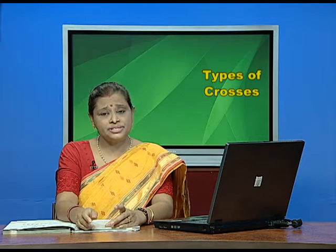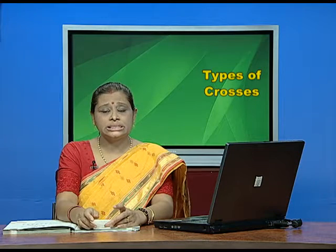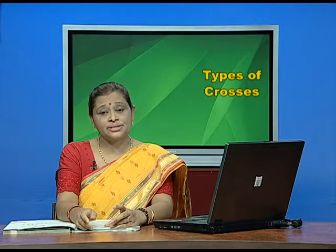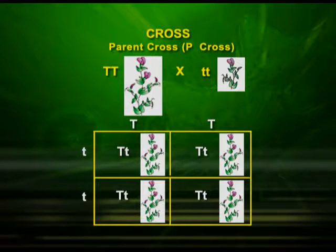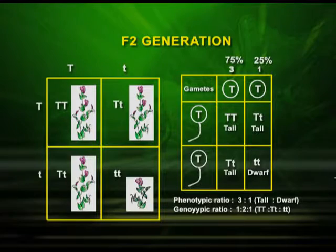Now let us look at the monohybrid cross. Mendel wondered why some plants were tall and some were short. He crossed a tall plant (TT) with a dwarf plant (tt). In the F1 generation, he obtained all tall plants with genotype Tt — so phenotypically all plants were tall. In the F2 generation, he obtained tall and dwarf plants in the ratio 3:1.